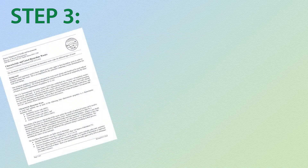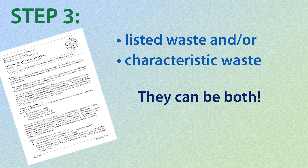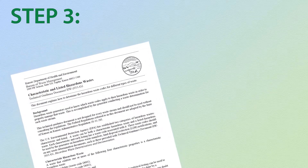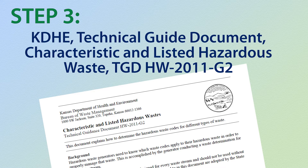From here, hazardous waste is divided into two broad categories: listed waste and characteristic waste, though they are not mutually exclusive. A hazardous waste can be both listed and characteristic. In fact, some hazardous wastes are only listed because of their characteristics. For more details on listed and characteristic hazardous waste and how to determine waste codes, please refer to the technical guidance document on characteristic and listed hazardous waste.